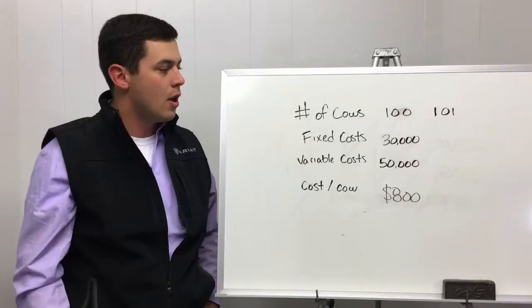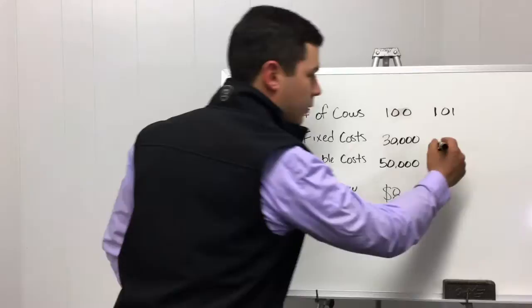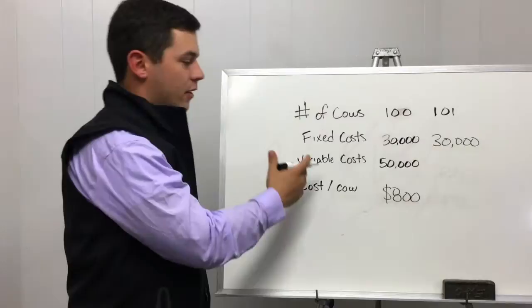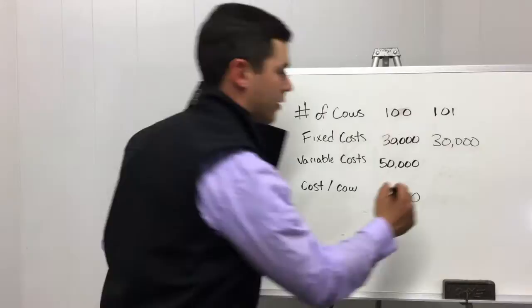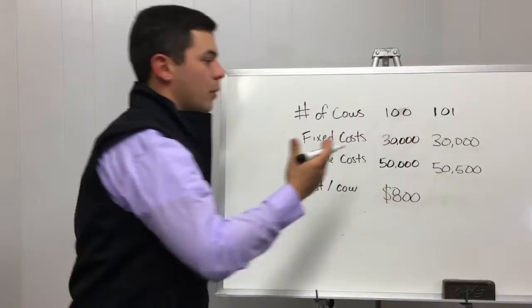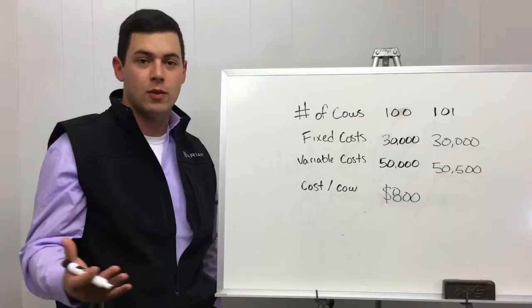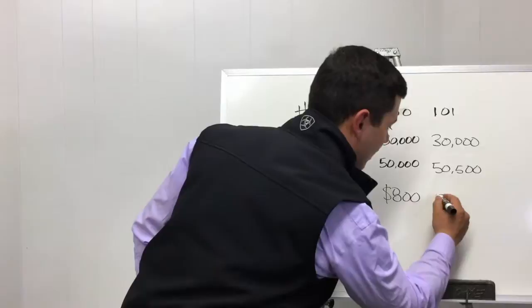...what we can do to actually boost profitability in this operation. So our fixed costs will remain at $30,000. And if we add the $500 per cow variable cost, our total variable cost is $50,500. When we put those two together and actually divide everything by our new cow herd size of 101 females, it comes out below $800 at $797.